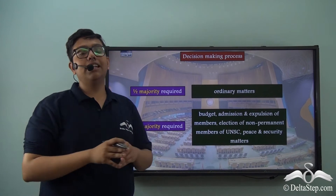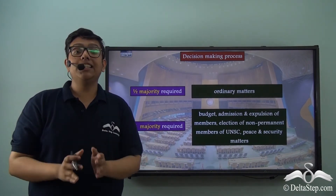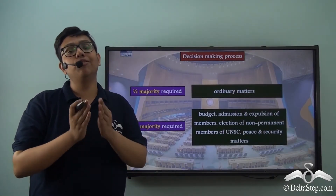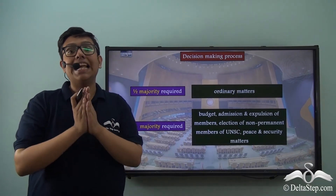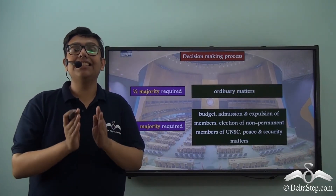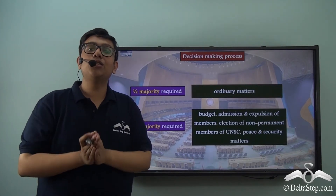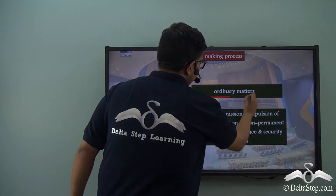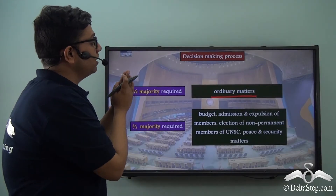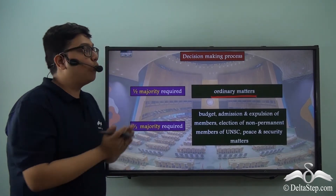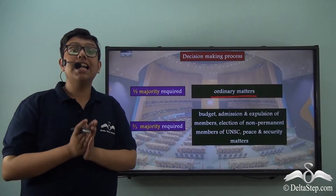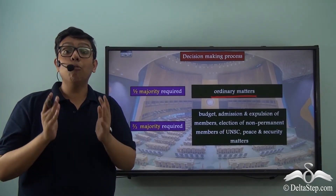While every member nation is entitled to one vote, all decisions are not made on the same majority. We generally understand that the side which gets more than half of the votes — more than 50% — wins. This is known as simple majority and it also exists in the General Assembly. In case of all ordinary matters, such as general administration, only a half majority is required. However, some discussions are more important and therefore demand more consensus.